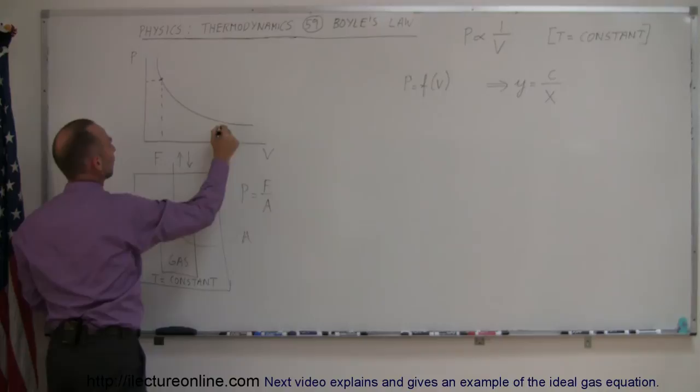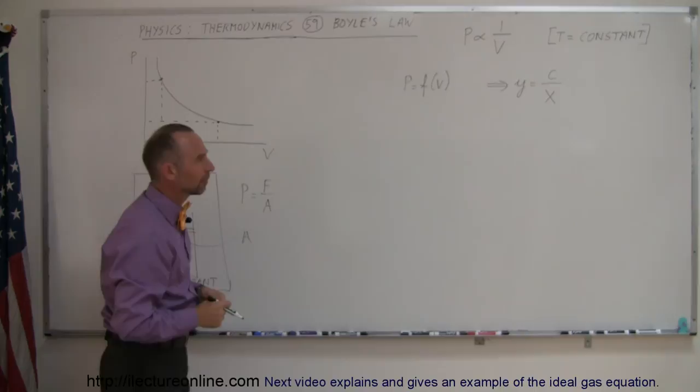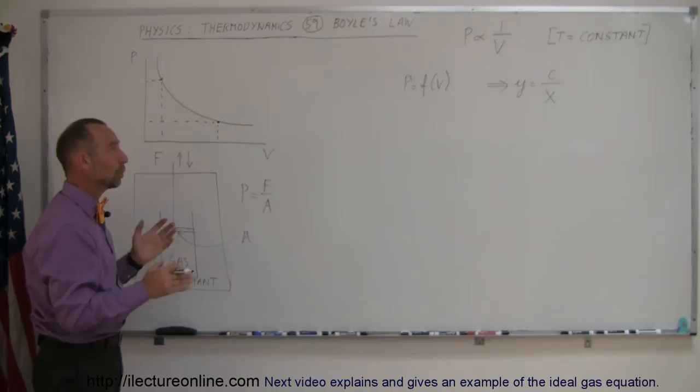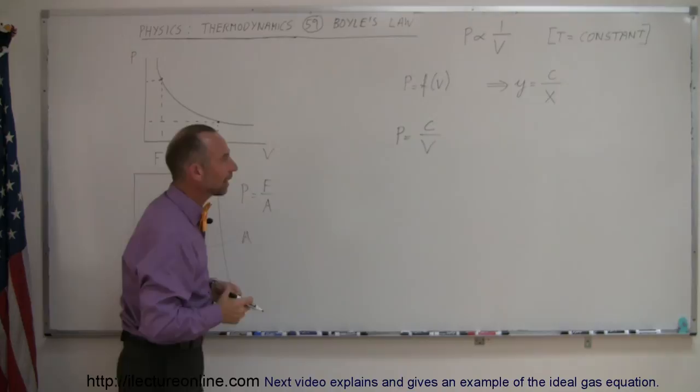And so that is an equation that looks something like y equals some constant over x, or in the form of y equals 1 over x. Of course, we don't have a 1 there. We have some sort of constant. We have to find the constant of proportionality between pressure and volume to come up with an equation. So this ended up being something like this: the pressure is equal to some constant divided by the volume. And of course, the key was to find out what that constant was.